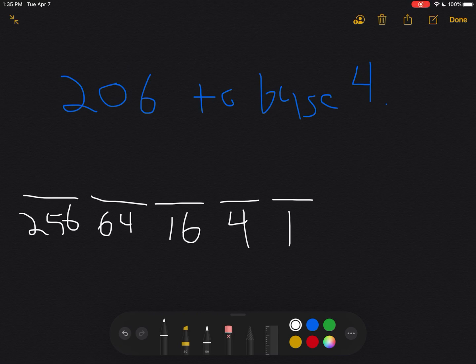Now I need to fill in the blanks here. But notice, I only need to go up until I get to a place value bigger than the number. There aren't any 256s in 206, so I don't need a value in the 256 place.